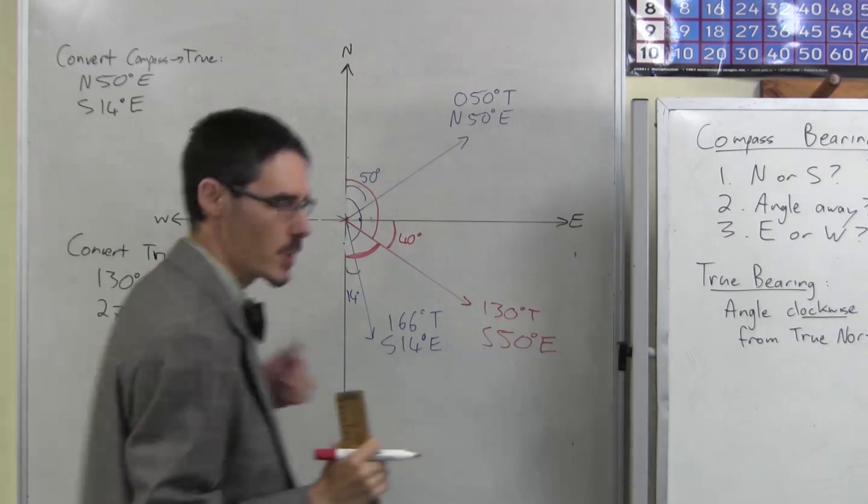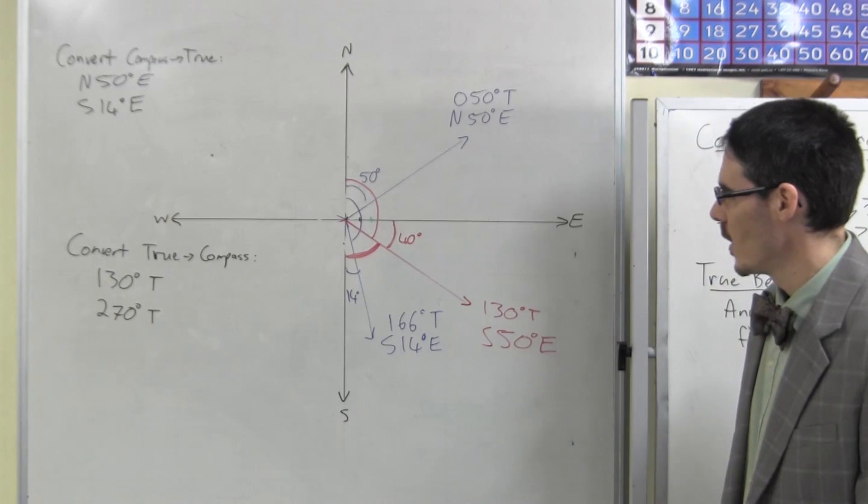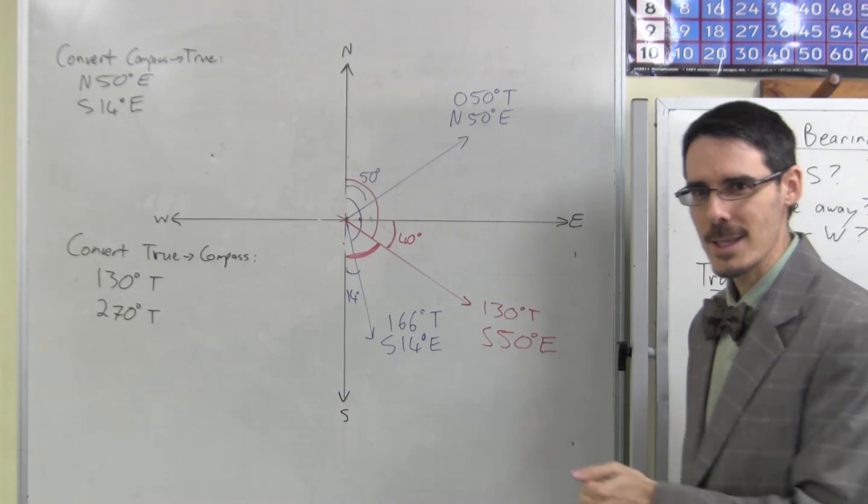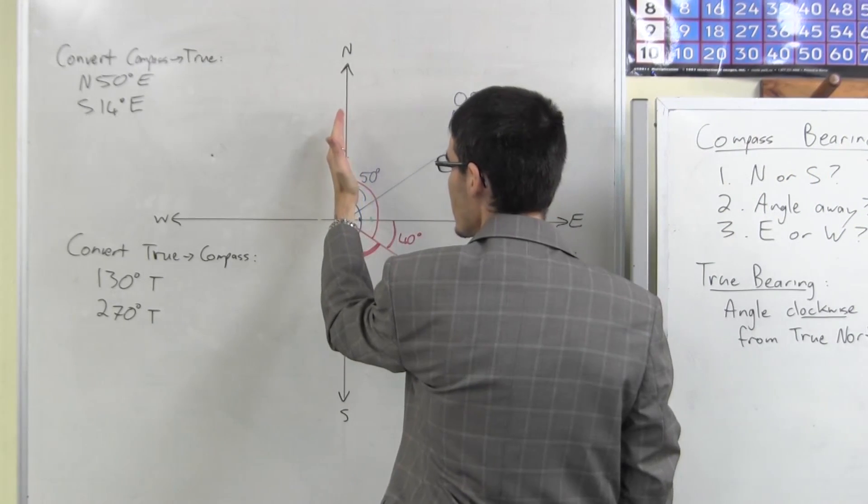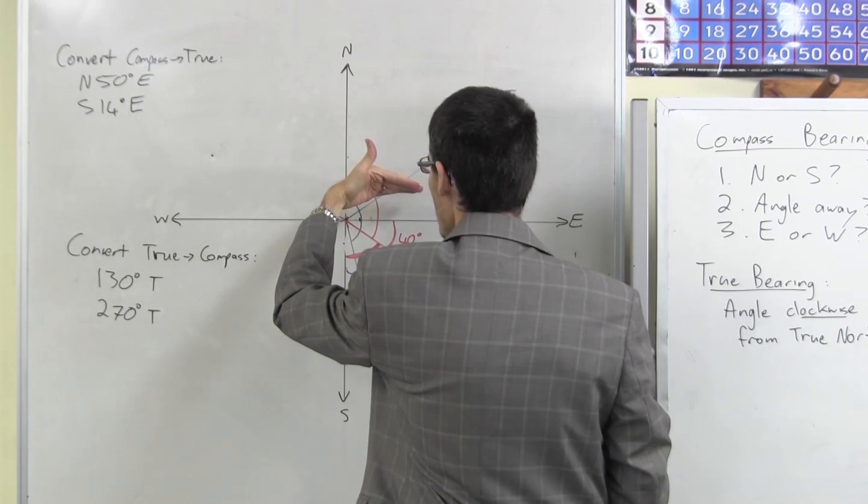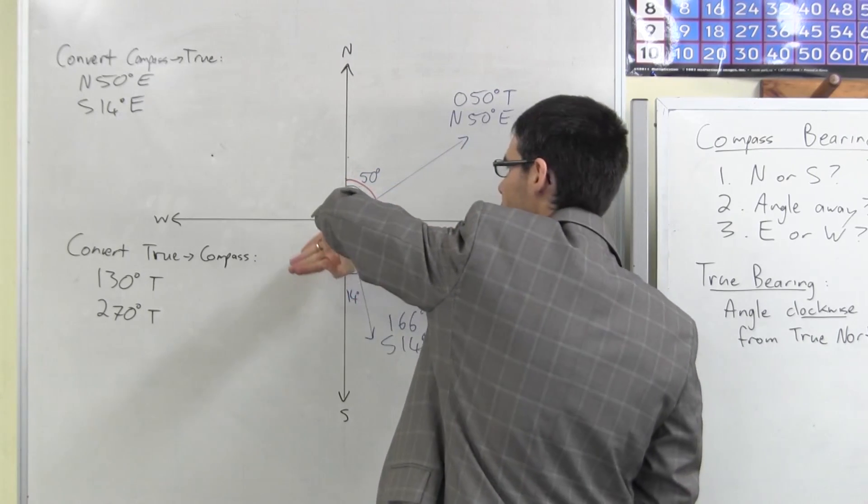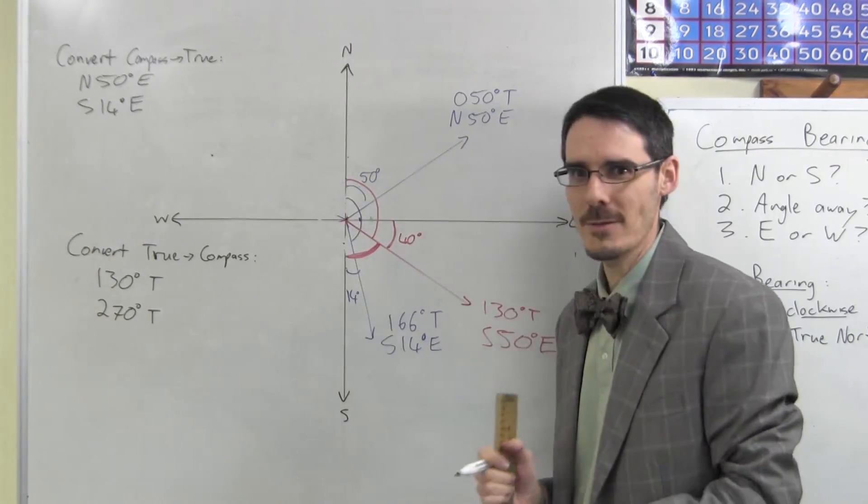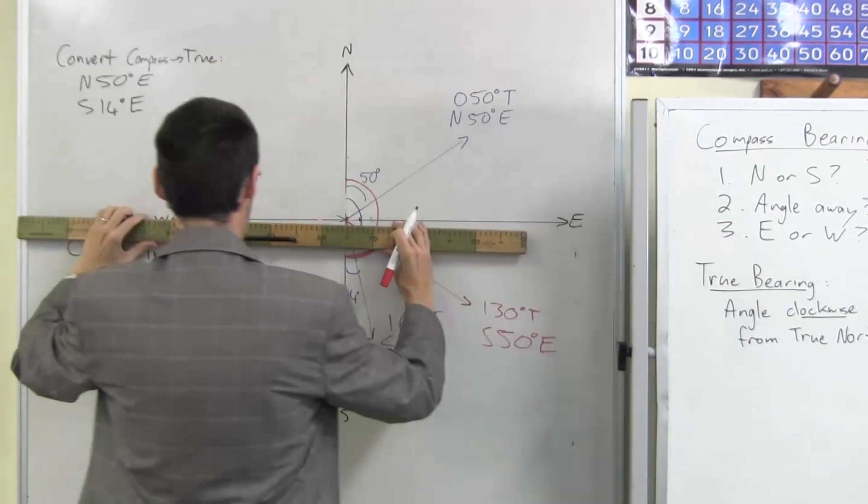Last one. 270 degrees. Well, 270 degrees. Let's see. Clockwise from north. So 90, 180. Oh, 270. It's directly west.